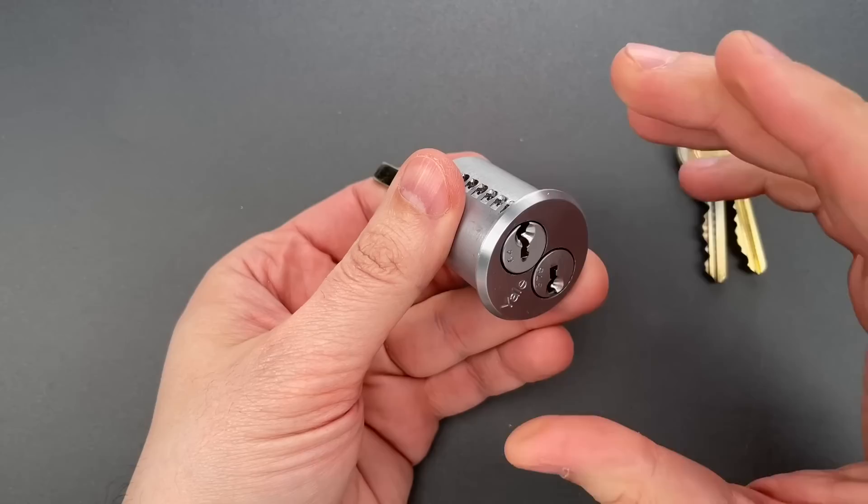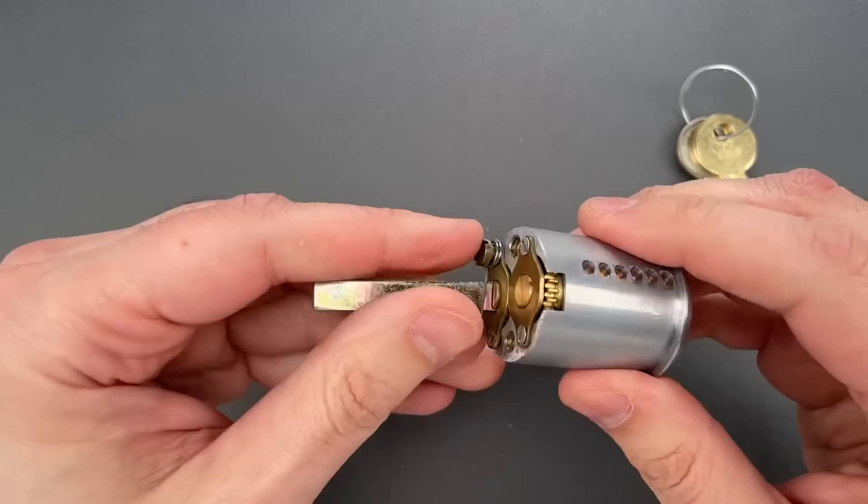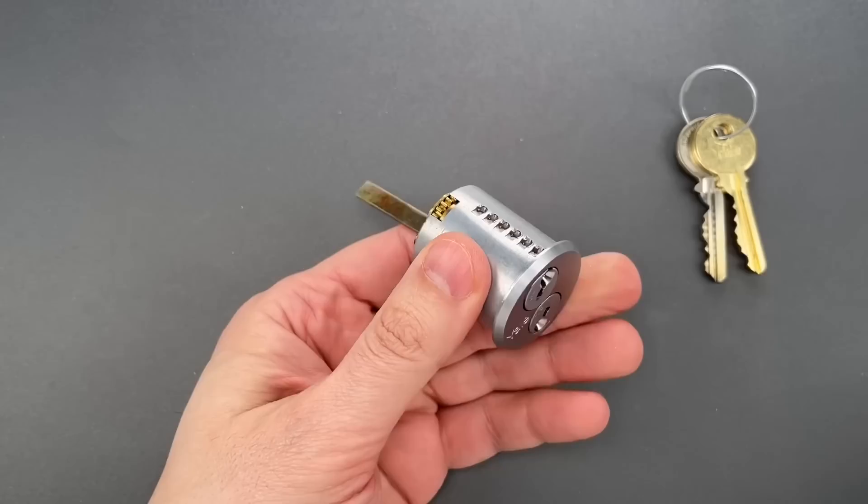That is very significant because whenever a core is decoupled from the locking mechanism, it creates the possibility of an easy bypass. Here, the only thing that actually moves these gears and the tailpiece is the tip of the key. It's hard for me to explain in words how terrible an idea that is, so I'm just going to show you.